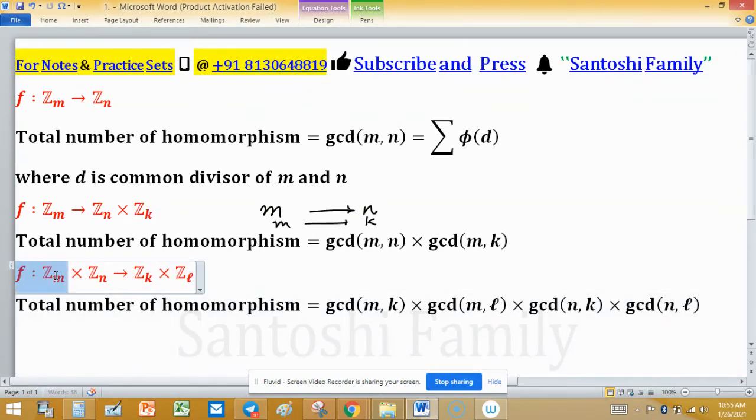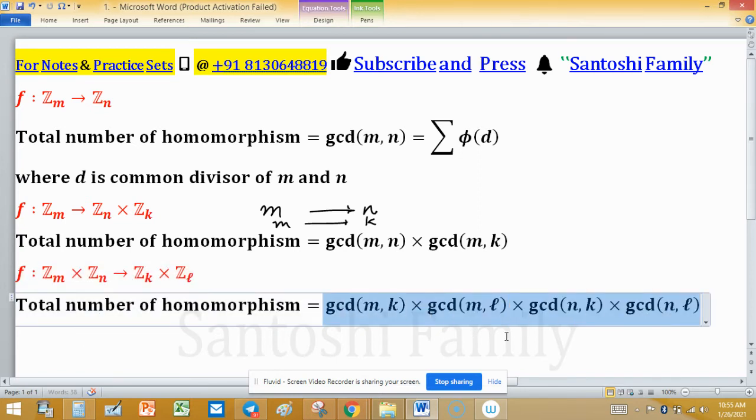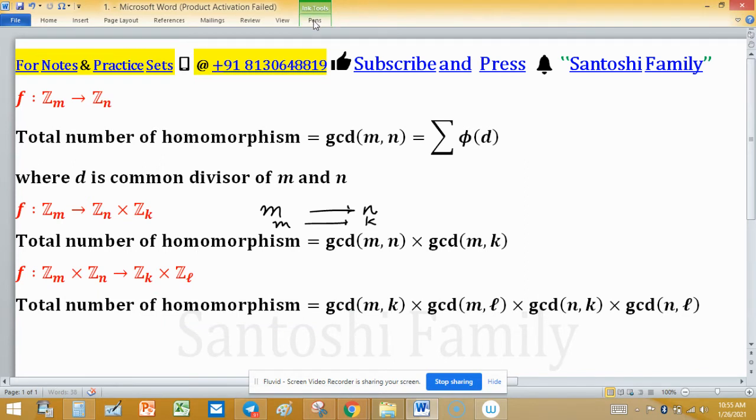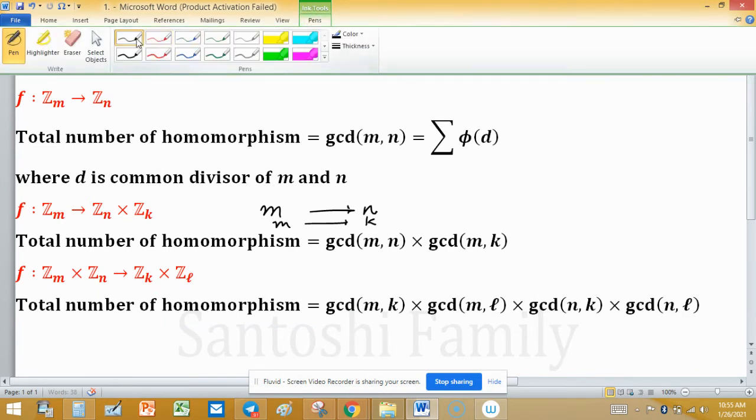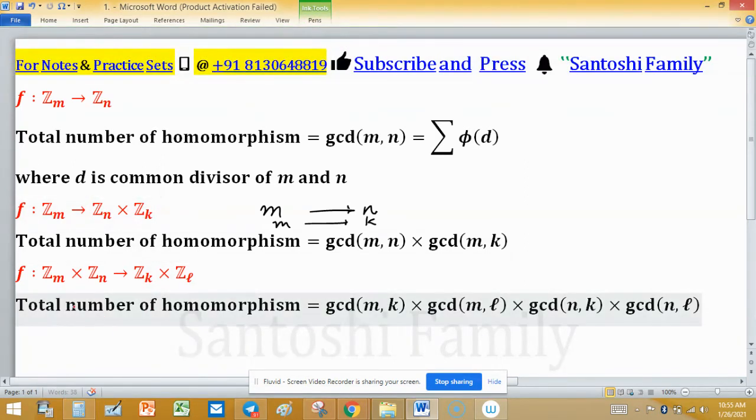If f is a function defined from Zm × Zn to Zk × Zl, then the total number of homomorphisms you can find by this formula. To remember this formula, it works as distributive property.